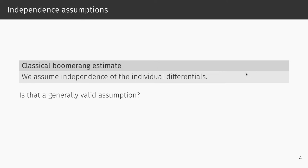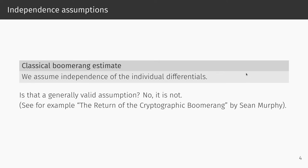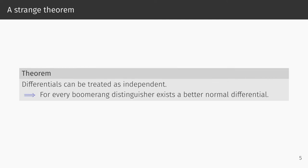As it turns out, this assumption does not hold in general. The most famous example is probably the publication The Return of the Cryptographic Boomerang by Sean Murphy. To add to the list of conflicting statements that result from making these independence assumptions, we proved the following theorem: if we assume that we can treat the differentials in a boomerang distinguisher as independent, then there exists for every boomerang distinguisher a standard differential over the entire block cipher with significantly higher probability than the boomerang. This stands, of course, in contrast with the entire idea of a boomerang distinguisher. I want to stress that we don't believe this to be true, but it is an indication of how troublesome these independence assumptions are.